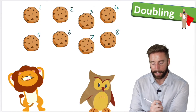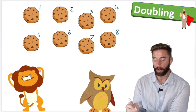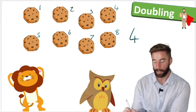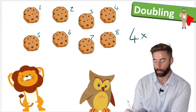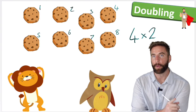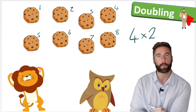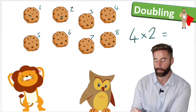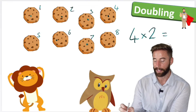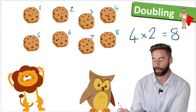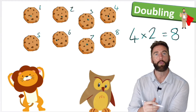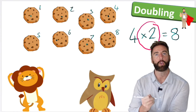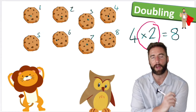And what does this look like as a number sentence? Well, we started with four, and this time what we did is we timesed it by two — very different to our halving where we divided by two. This one is times by two. And how many did we get? Let's check: one, two, three, four, five, six, seven, eight. We got eight cookies. So doubling is the same as saying multiply by two, or times two. Let's try and remember that.